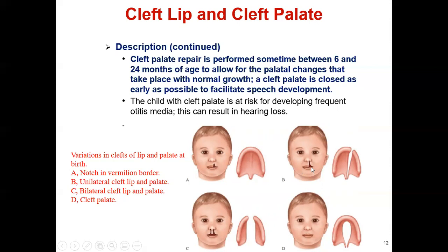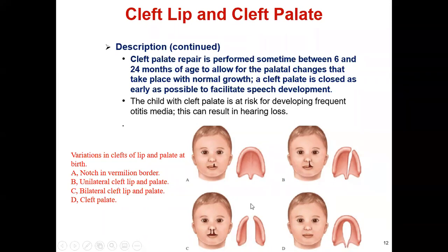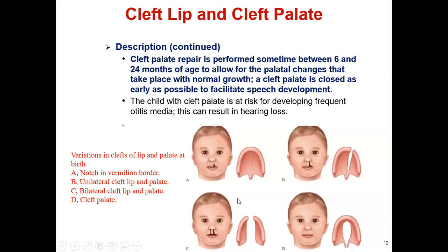In the pictures shown: picture A shows a notch in the vermilion border; picture B shows unilateral cleft lip and palate; picture C shows bilateral cleft lip and palate; and picture D shows a normal lip but with a palate problem called cleft palate. The cleft palate is an opening in the upper palate that varies in size from a very small slit to a large opening into the nose, affecting part or all of the roof of the mouth.